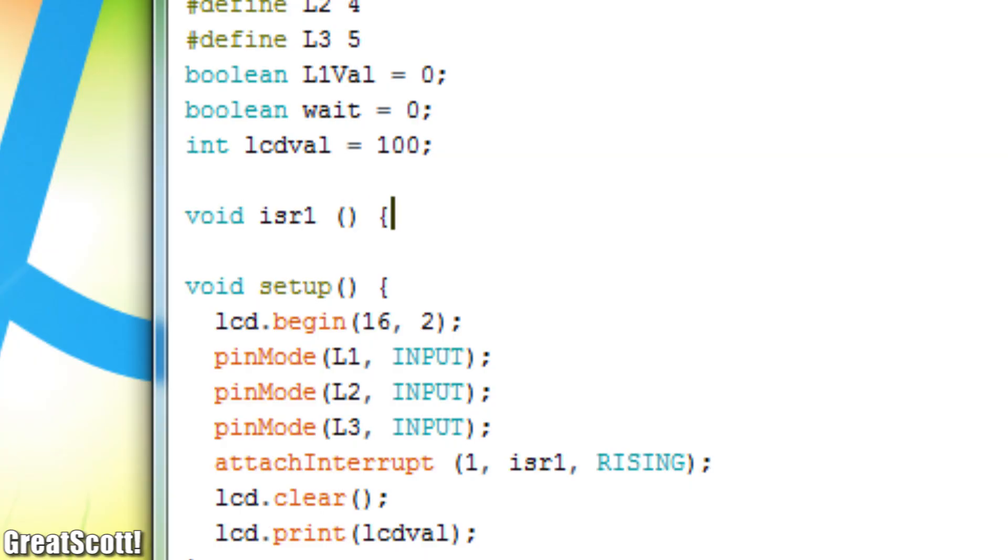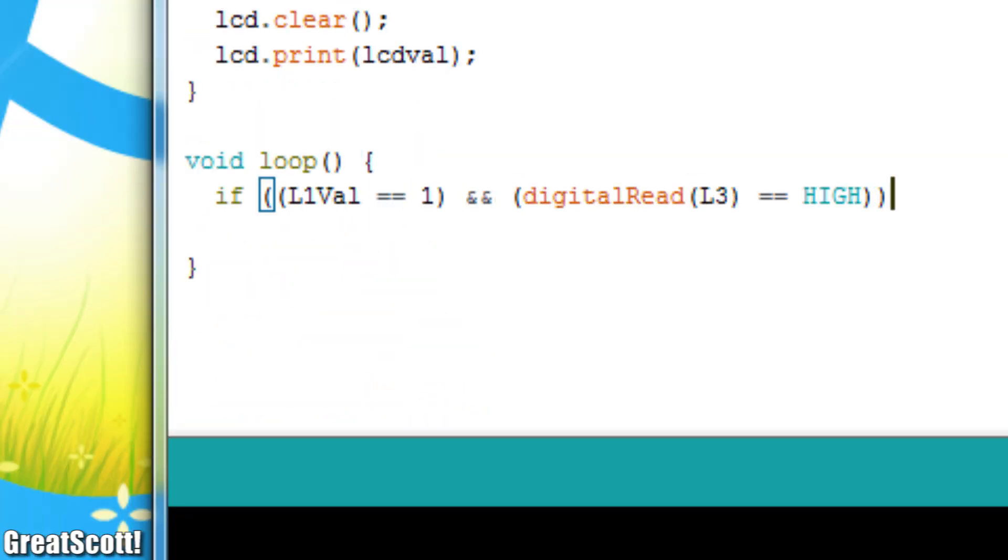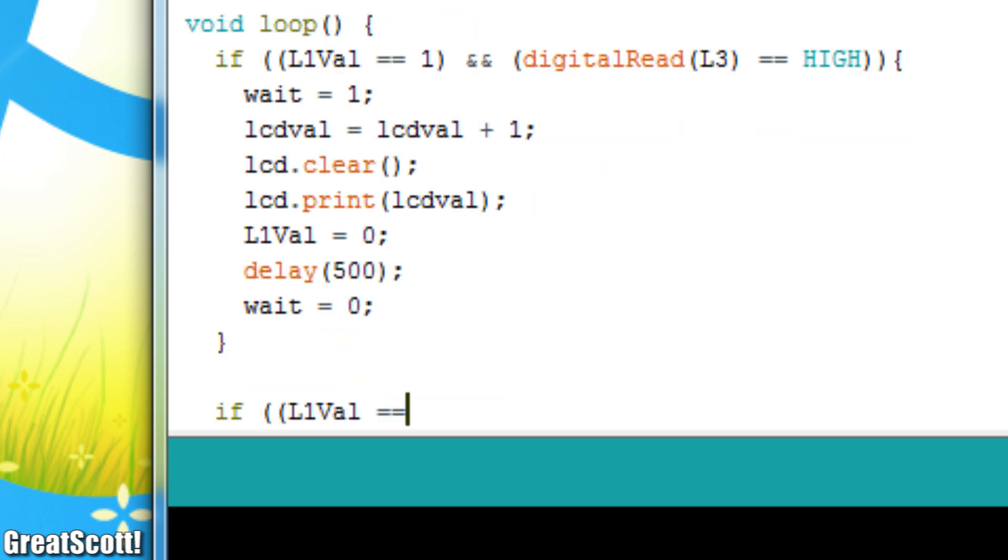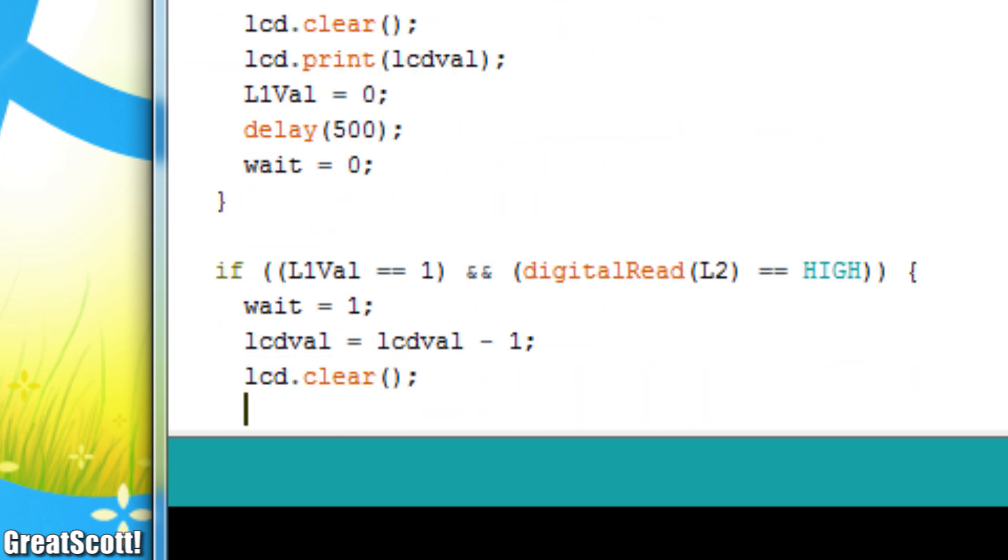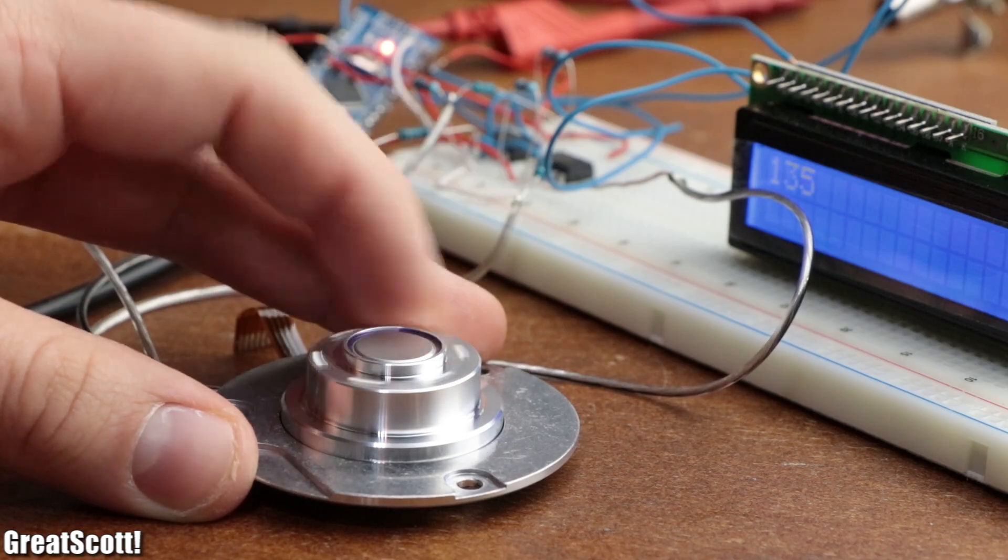Now by activating the interrupts which only sets a flag, and including the digital read functions to see which phase got a voltage induced afterwards, the code became much more flexible and responsive to the rotation of the motor.